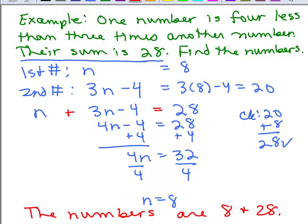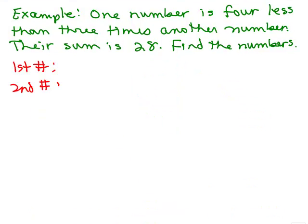Now, let's do the same problem using two variables. We know we're looking for two numbers, so we could just define them as x and y. One number is 4 less than 3 times the number. We have to write two equations if you have two variables.